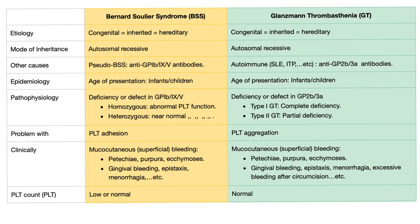Epidemiology: the typical presentation for both is an infant or child. Pathophysiology: Bernard-Soulier has deficiency or defect of GP1B95 — homozygous gives abnormal platelet function, heterozygous gives near-normal function. Glanzmann's has deficiency or defect in GP2B3A: Type 1 is complete deficiency (very severe), Type 2 is partial deficiency. The problem in Bernard-Soulier is platelet adhesion; in Glanzmann's it's platelet aggregation.